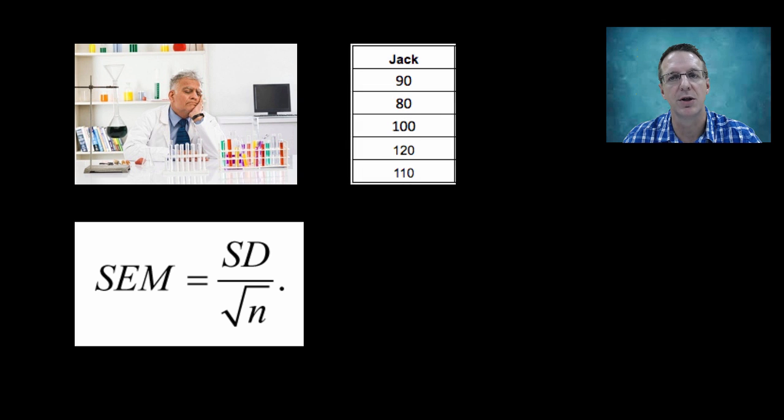That brings us back to the earlier equation that we looked at. Using a single experiment that has n number of trials, you can estimate the SEM by dividing the standard deviation of the experiment by the square root of the sample size. In the case of Jack's original data of 5 runs, the standard deviation was 16.